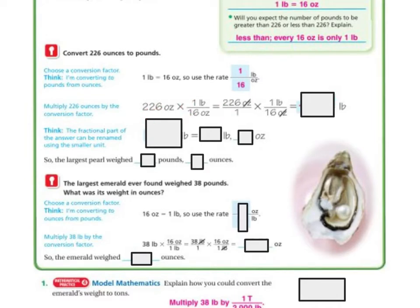So we have 226 times 1, which is 226, and 1 times 16, which is 16. Then 16 can go into 226 fourteen times with 2 left over. So it's 14 and 2/16 pounds.